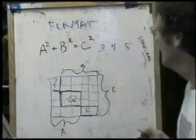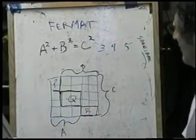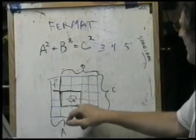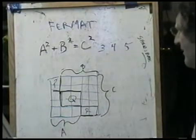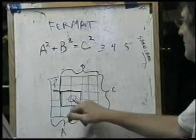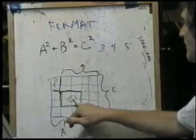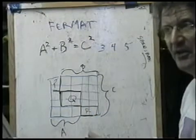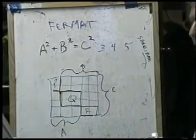Given that 3, 4, 5 works, it certainly does, what is the next value of Q that has the possibility of working? And the answer is this.